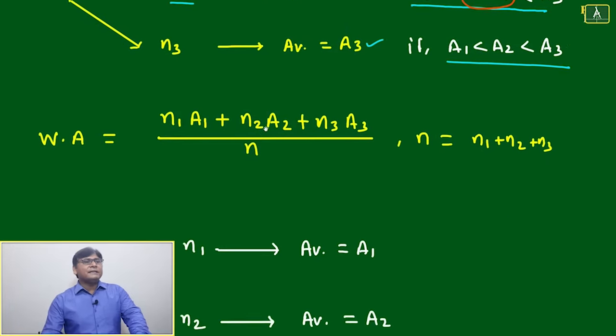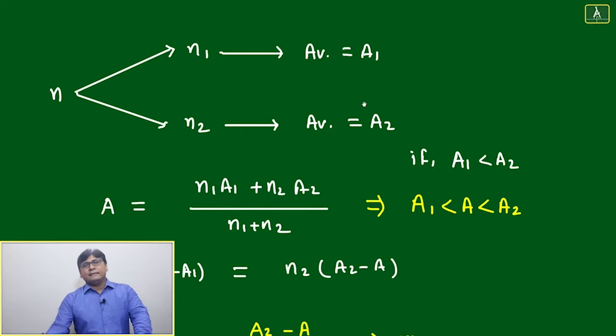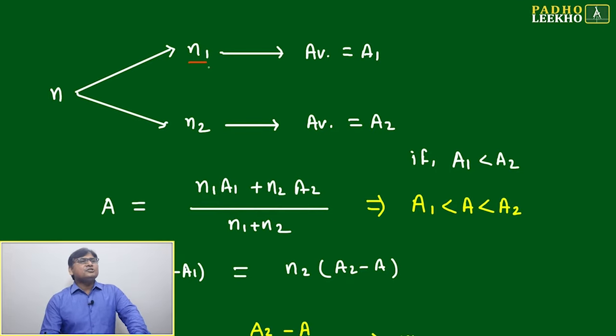Now how to calculate weighted average? Weighted average equals (n1·A1 + n2·A2 + n3·A3) divided by n, where n = n1 + n2 + n3. Now, to divide into two groups: n is divided into two groups n1 and n2.